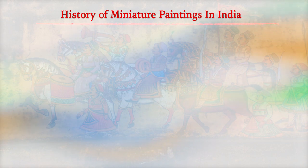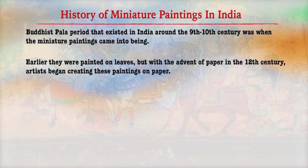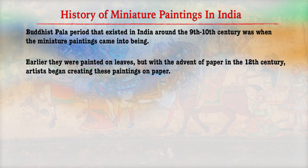Paintings on cloth or paper is one of the common practices. These paintings are mythological in character, and incidents from religious texts are depicted, though it differs from artist to artist. The foundation of miniature painting in India can be traced back to the 9th century, but they reached their glory at the time of Mughal rule. The Buddhist Pala period, existing around the 9th to 10th century, was the time when miniature painting came into being.